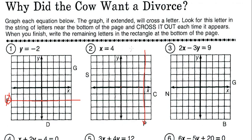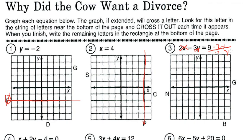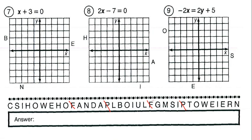Question 3: we have an equation, so we need to get y on one side. We subtract 2x, then divide everything by negative 3, giving us y equals negative 3 plus 2/3 x. So we start at y equals negative 3, with a slope of 2/3 — up 2, over 3. That line goes right through G, so let's cancel out G.